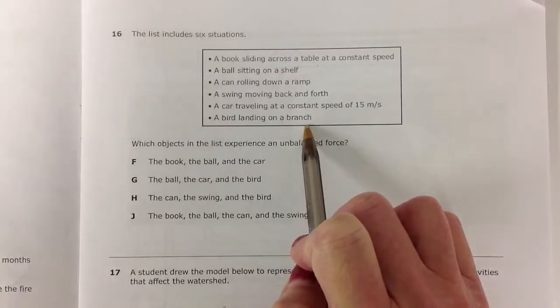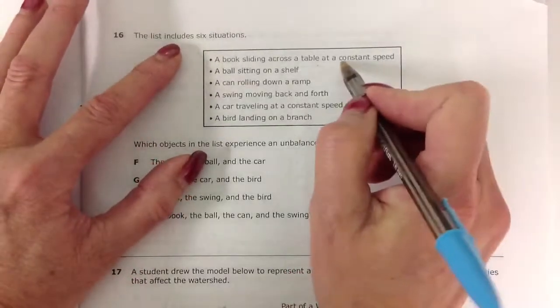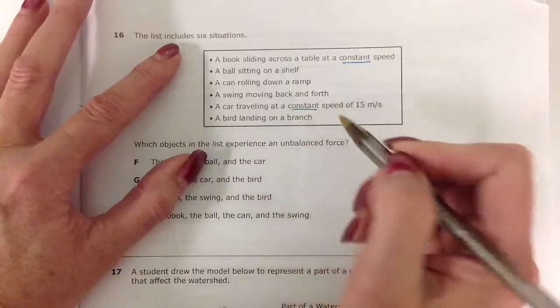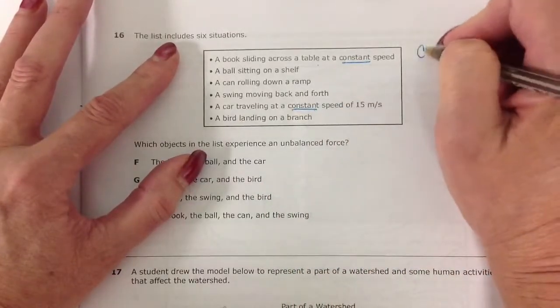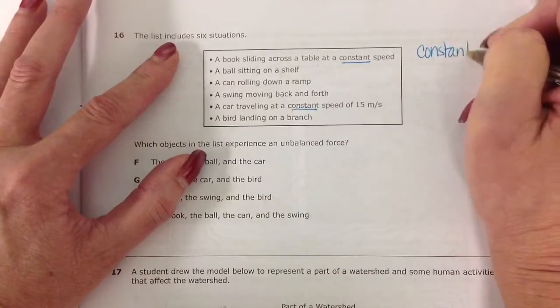So if I look at these, I notice something right away. They're using constant speed. So I know constant speed tells me that we have a balanced force.